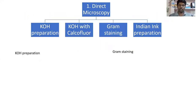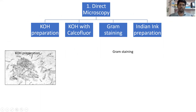Under direct microscopy we will perform four types of preparations: KOH preparation, KOH with calcofluor, gram staining, and Indian ink staining. In KOH preparation, we take a drop of potassium hydroxide on a glass slide, add the fungal specimen, and observe under the microscope after placing a cover slip.